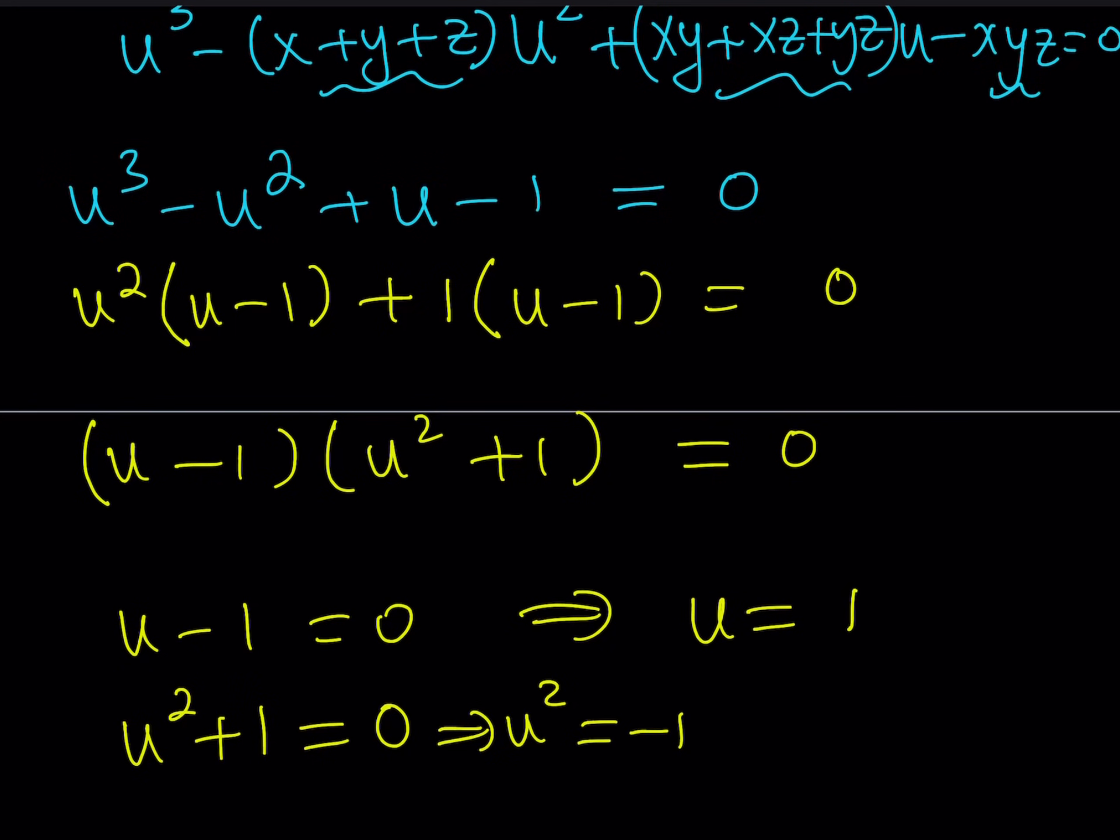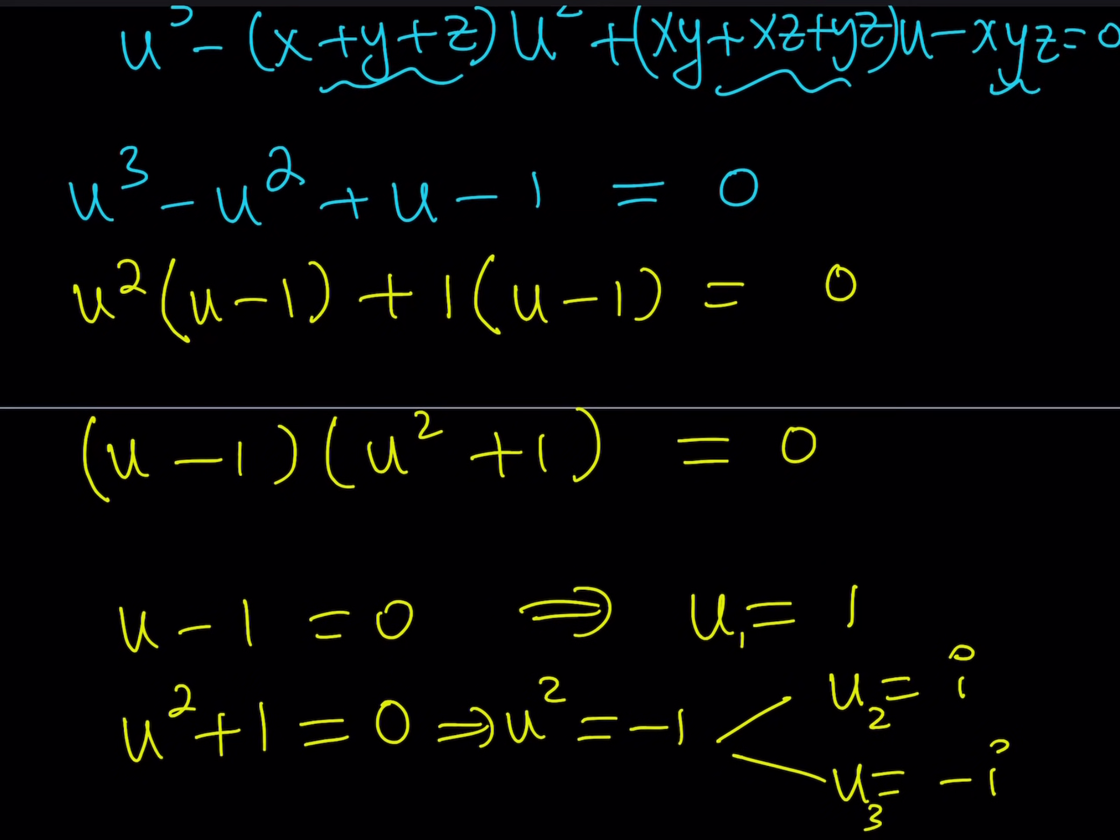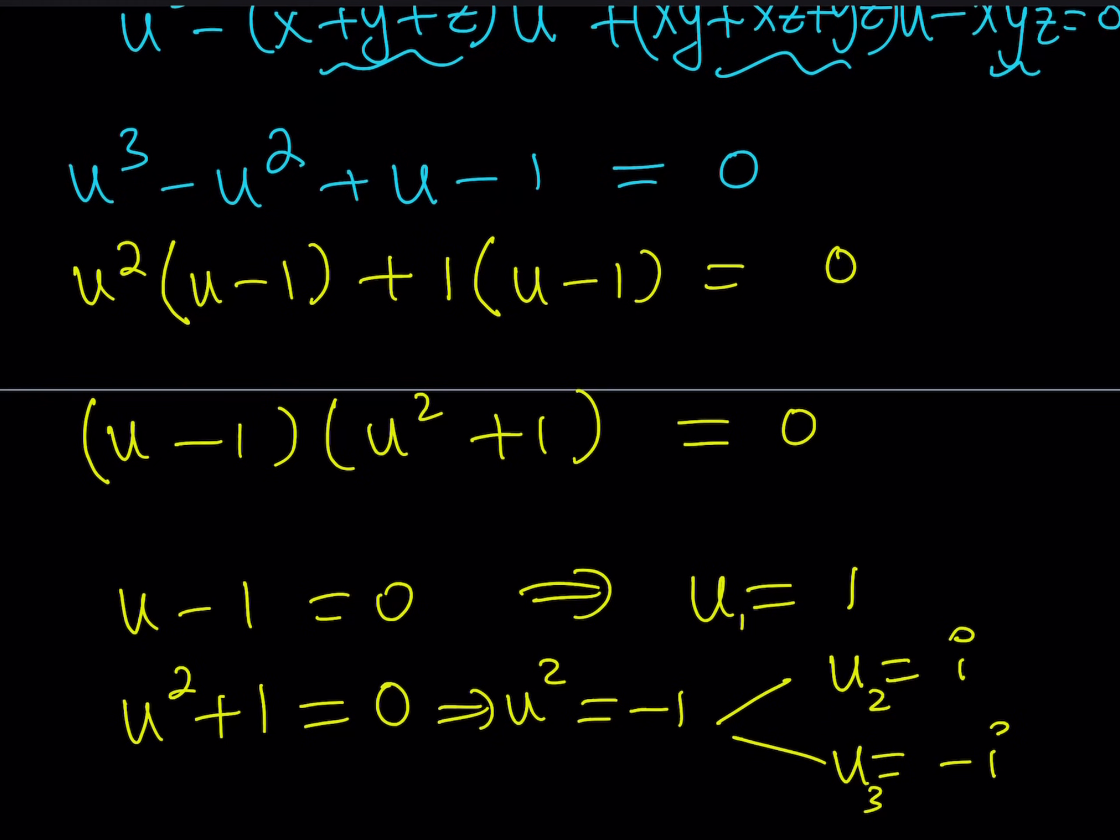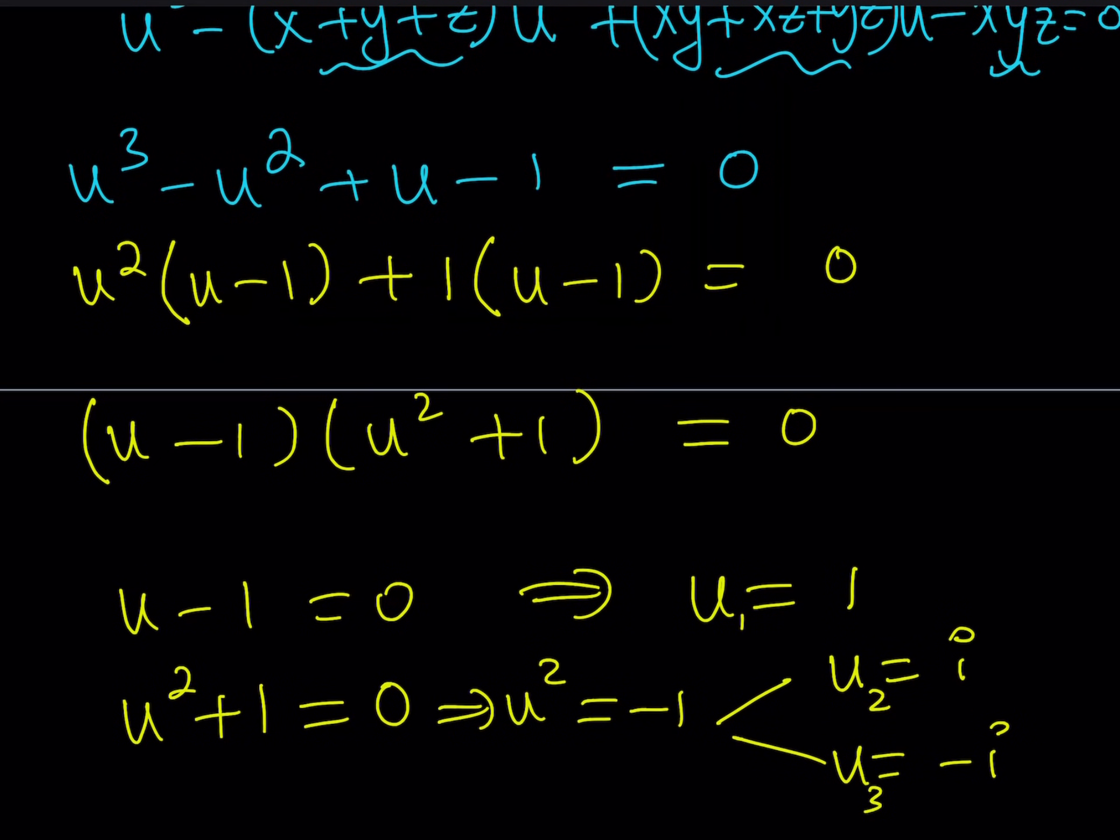As you know, no real number squared can be negative 1, but this is not true for complex numbers. So we have the solutions, I and negative I. If you want to call these U1, U2, and U3, and these are going to be all the solutions to our complex system.